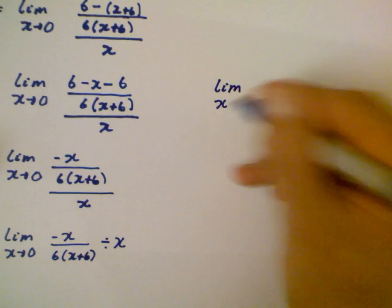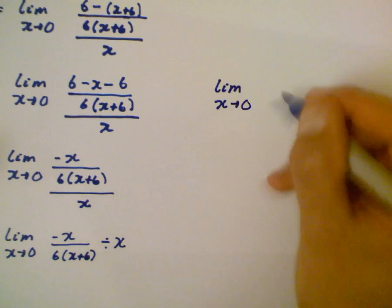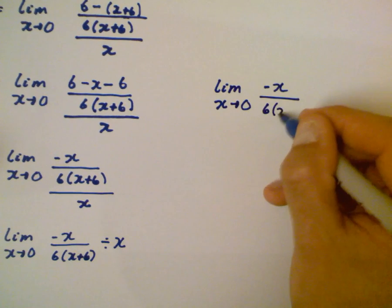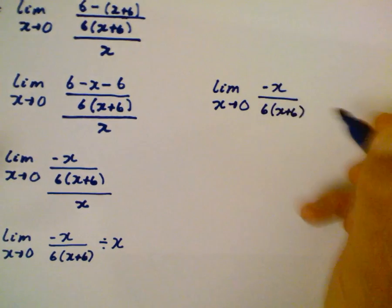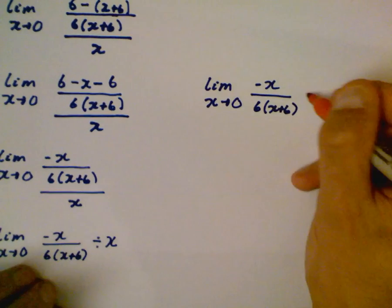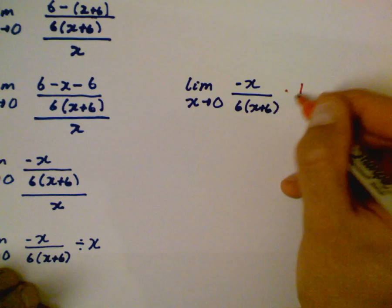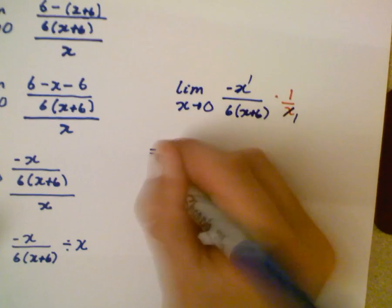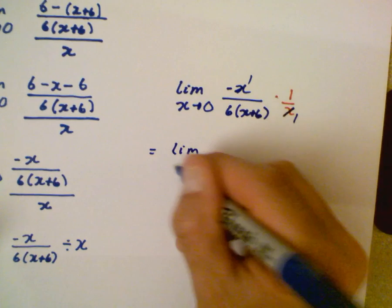But we're not dividing by x anymore, we're multiplying by 1 over x. Okay and look what that does for us, look what happens to the x values. They become one, like terms, so now we're left with limit as x is approaching zero of negative 1 over 6 times x plus 6.